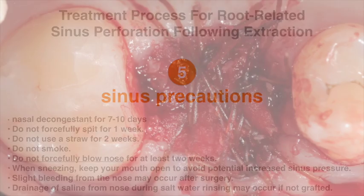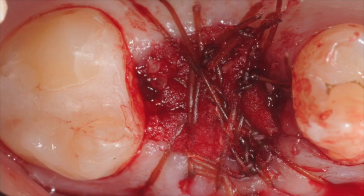The gingival tissue will granulate and heal over the bone graft in about four to six weeks, and the bone graft itself will heal completely in four to six months. Thank you.